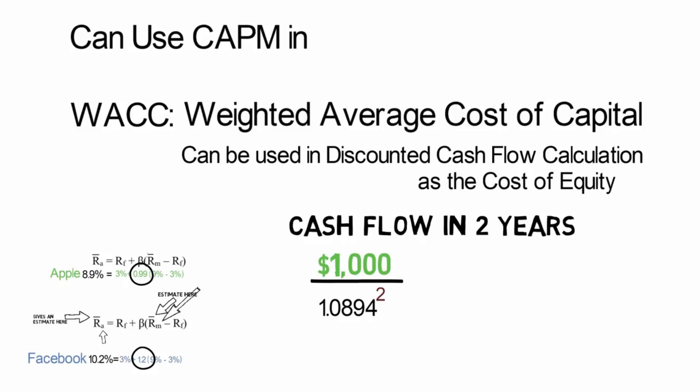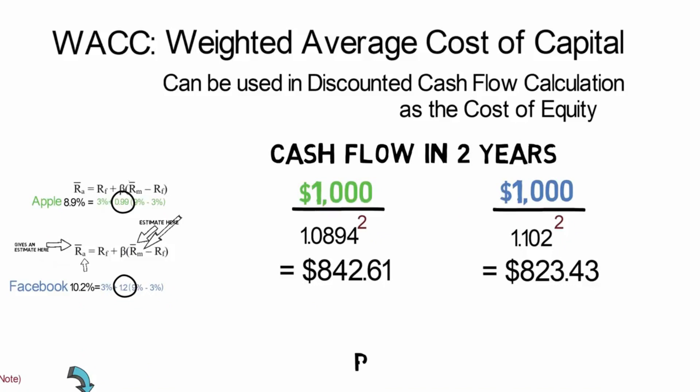And we can see that $1,000 in two years is worth $842.61 today. For Facebook, if you are also expecting $1,000 in two years, that would be worth $823.43 today. So in theory, that's the present value of your future cash flow expectations. What you want to do is pay less than that today. And if your expectations are correct, the bigger the gap between what you pay today and your calculated present value, the bigger your returns will be.